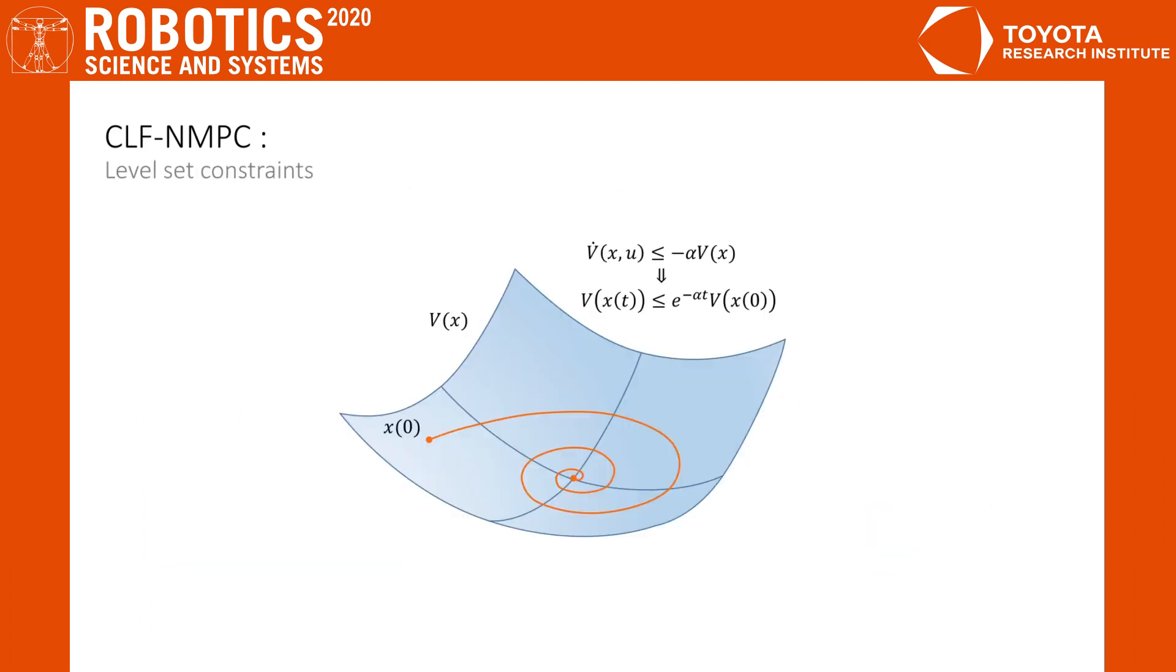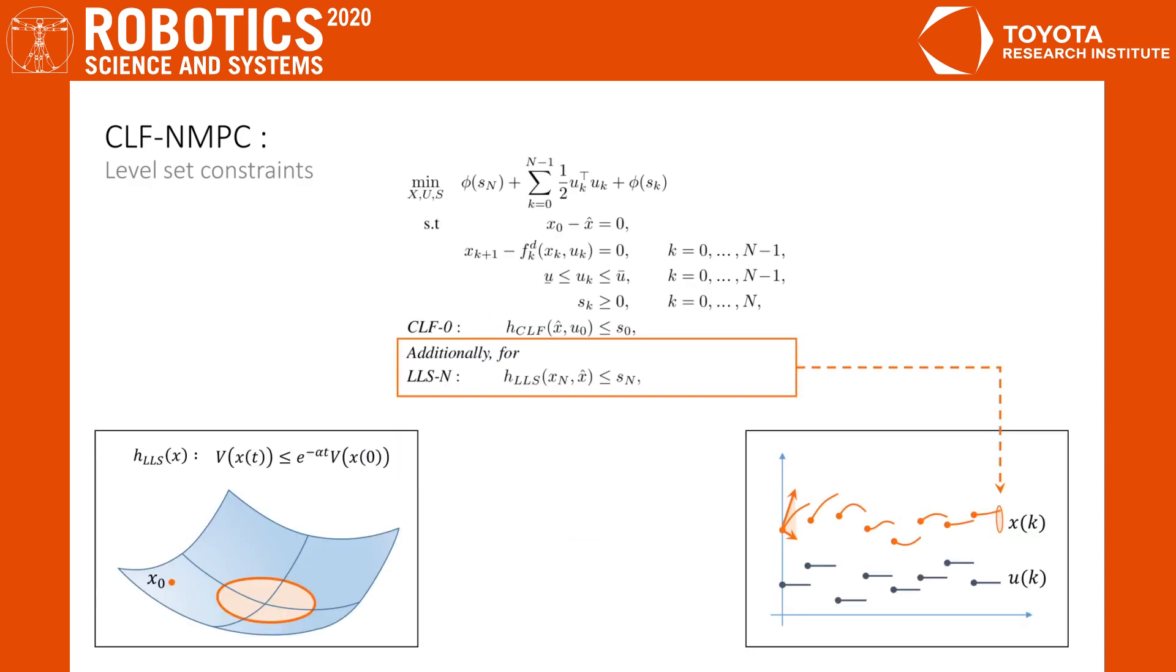However, there is another way to do it. If we step back and look at the derivative constraint, we can derive an upper bound on the Lyapunov function over time that holds for any trajectory. This means that after a certain time t, we know that the state must be within a particular level set. This can be exploited to constrain the tail of the MPC formulation. Since we know the horizon length, we can use the derived Lyapunov level set as a terminal constraint.